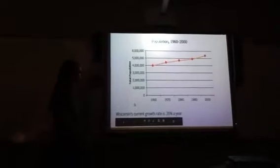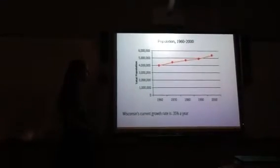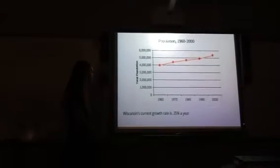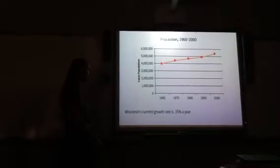Here's a chart of the population just slowly going up throughout the years. You can see how it increases. Wisconsin's current growth rate is 0.35% a year.